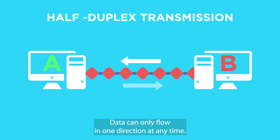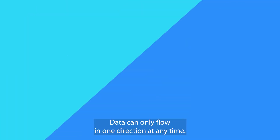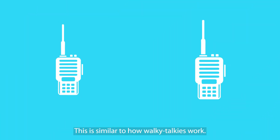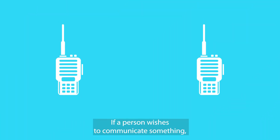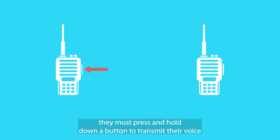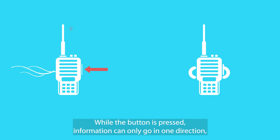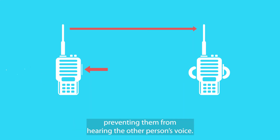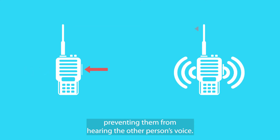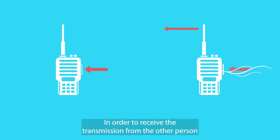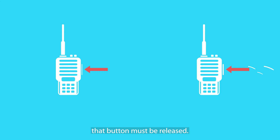So data can only flow in one direction at any time. This is similar to how walkie-talkies work. If a person wishes to communicate something, they must press and hold down a button to transmit their voice while another person listens. While the button is pressed, information can only go in one direction, preventing them from hearing the other person's voice. In order to receive the transmission from the other person, that button must be released.